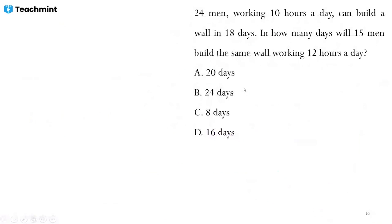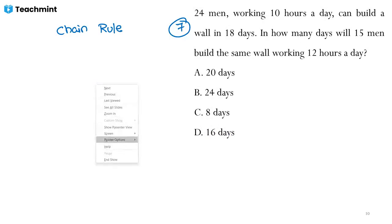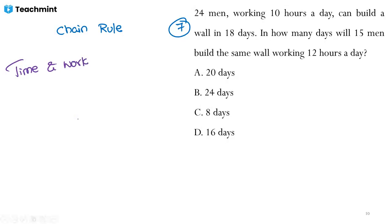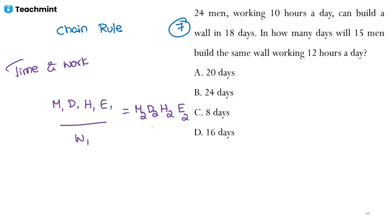Next is a chain rule question — time and work related. The chain rule formula is: M1×D1×H1×E1 / W1 = M2×D2×H2×E2 / W2, where M is the number of members, D is the number of days, H is hours worked per day, E is efficiency, and W is the work done.